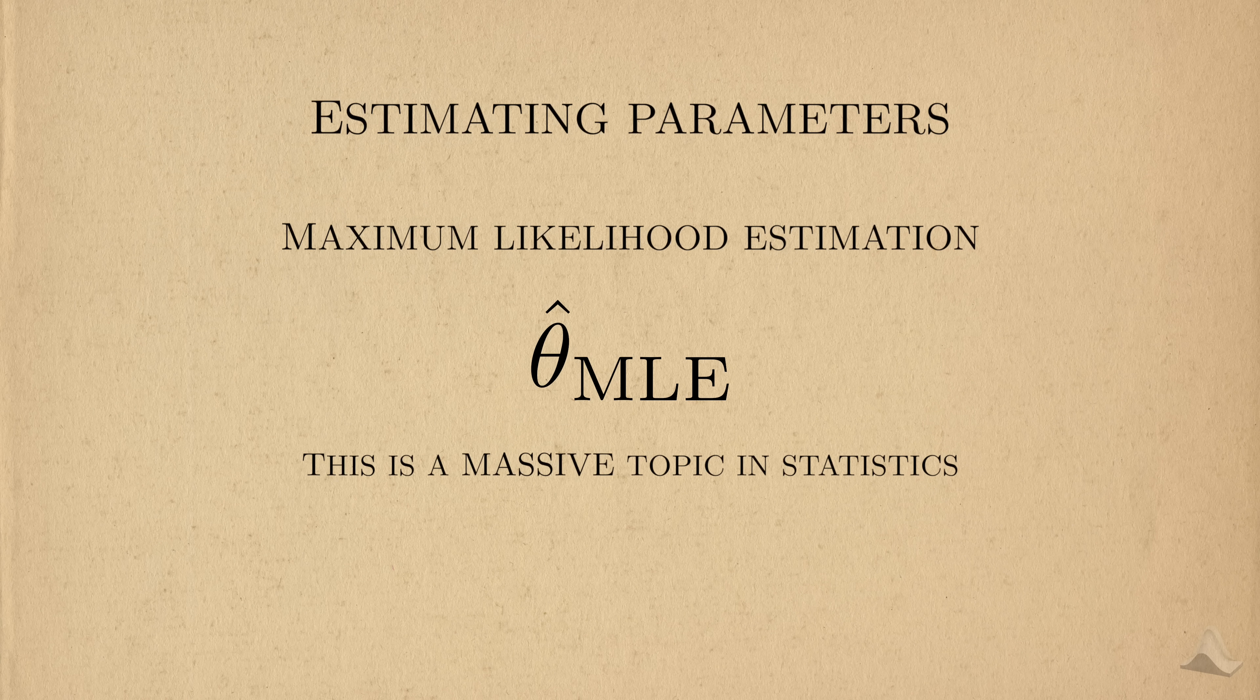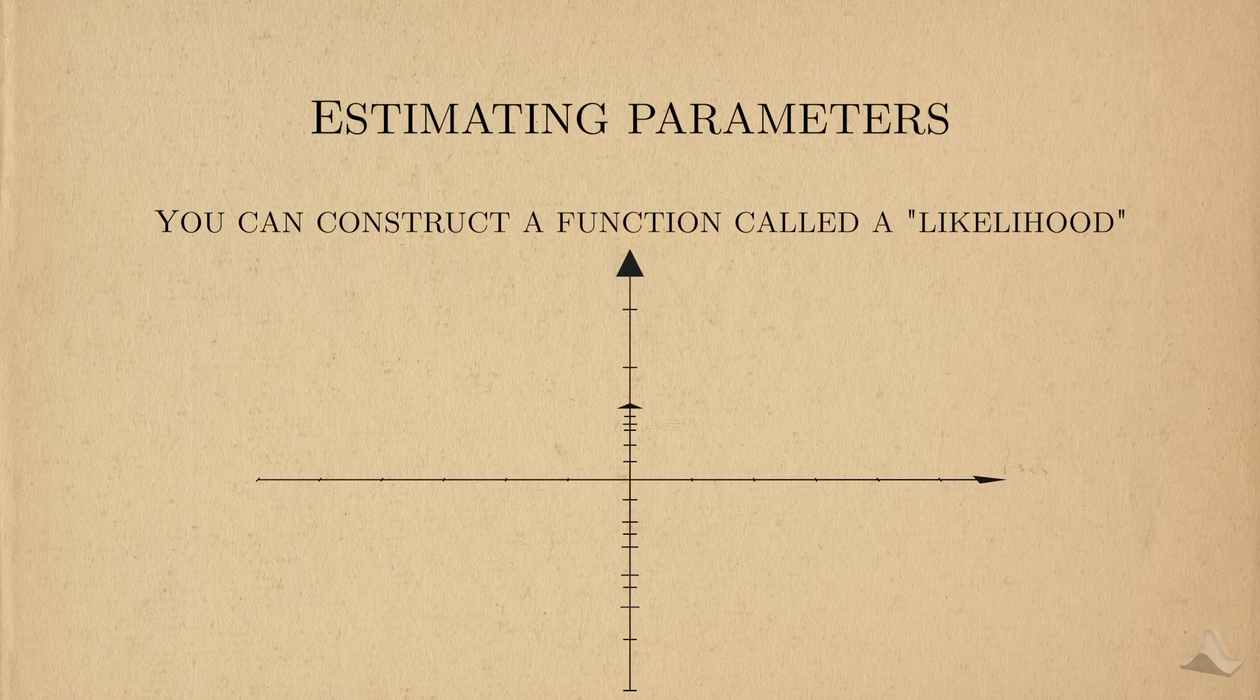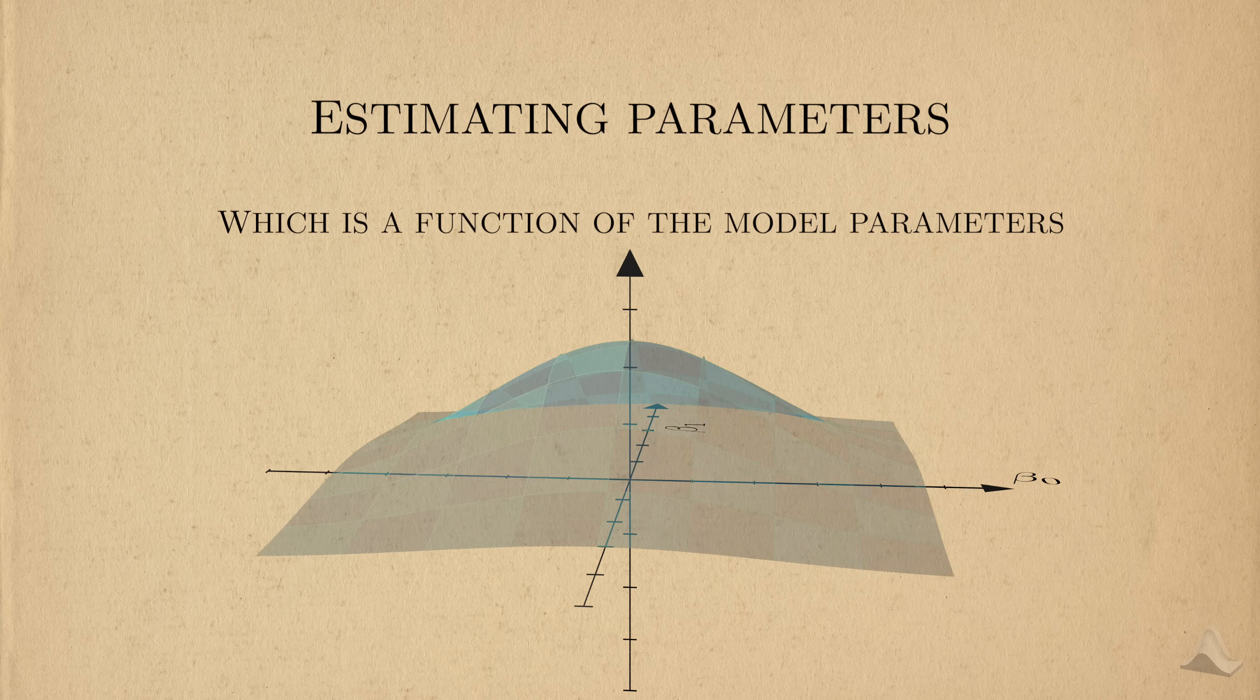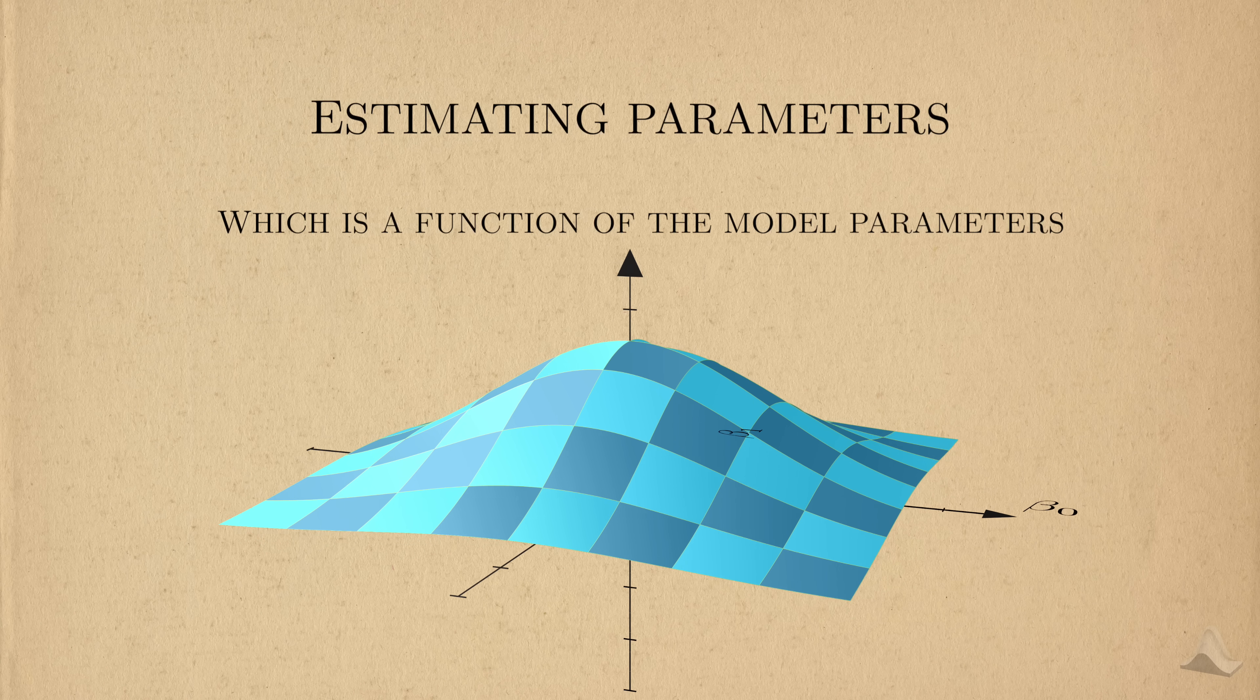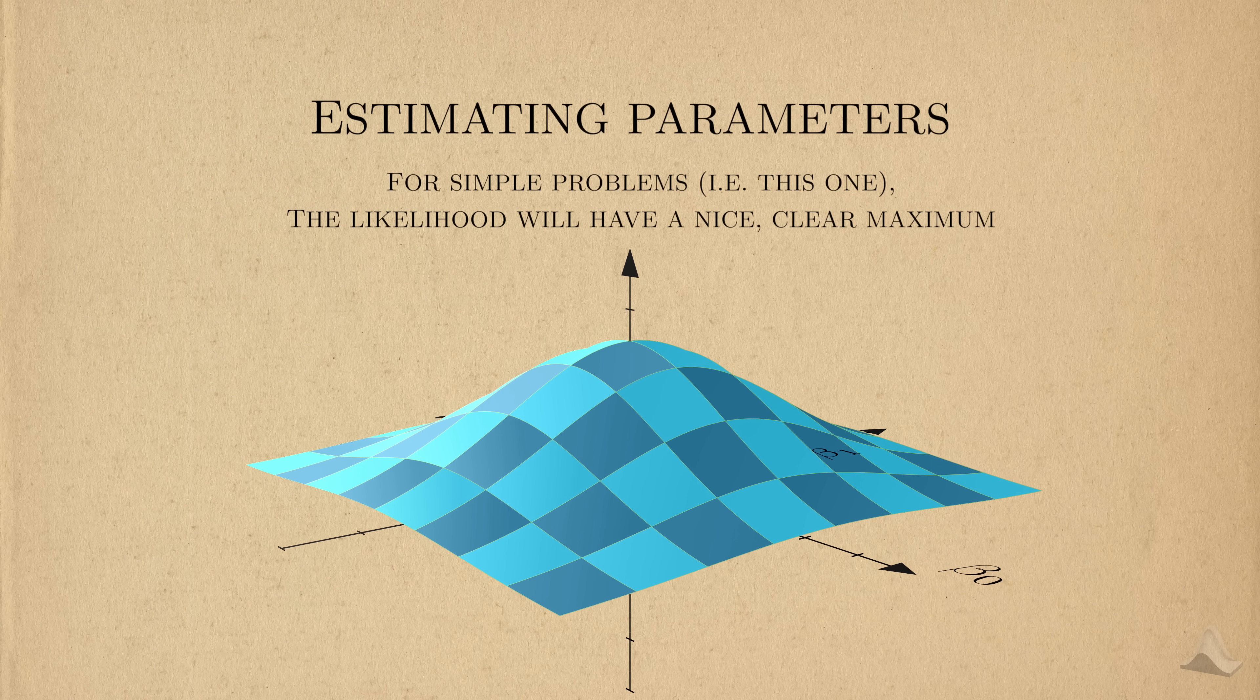Maximum likelihood is a massive topic that deserves its own video, so I'll just give you a vague intuition here. After you collect data, you can construct a function called a likelihood. We consider the likelihood to be a function of the parameters instead. With nice problems, the likelihood will have a nice, convex shape like this.